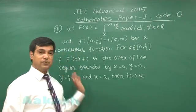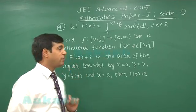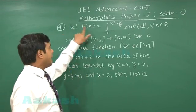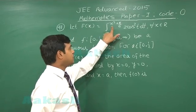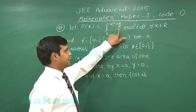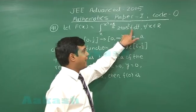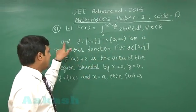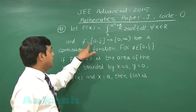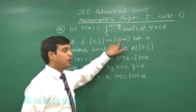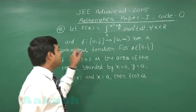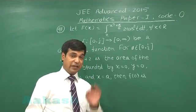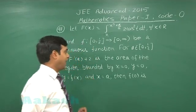Starting with the very first question, that is question number 41, let f(x) equals integral x to x squared plus pi by 6 of 2 cos squared t dt for all x from the set of real numbers, and small f from [0, 1/2] to [0, infinity) be a continuous function. Two different functions are given, capital F and small f.